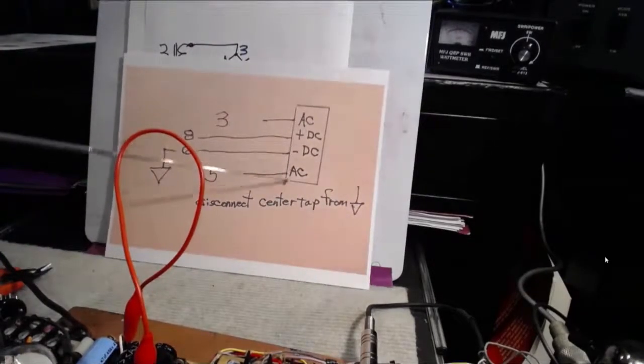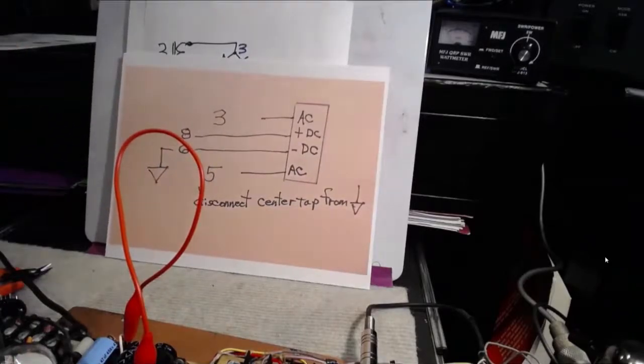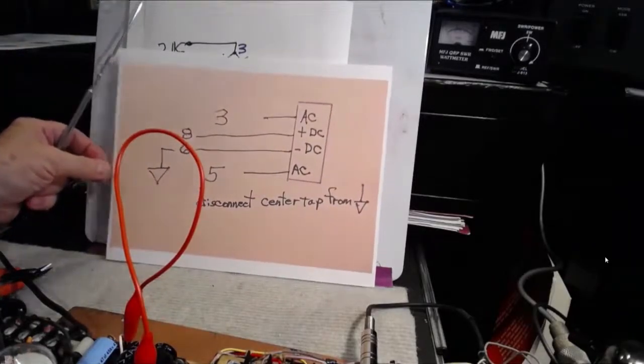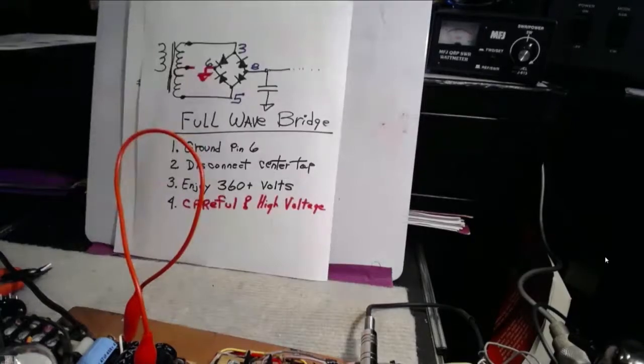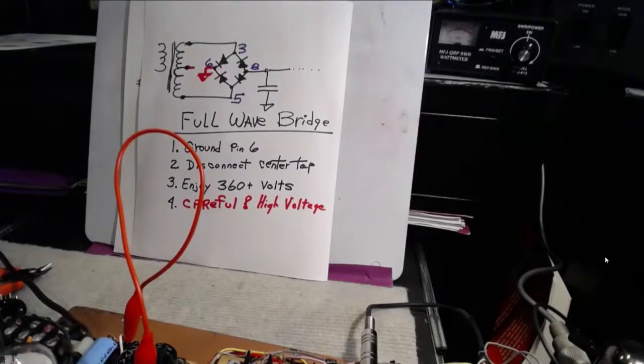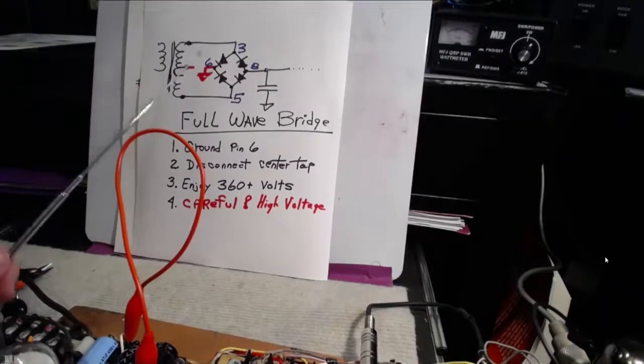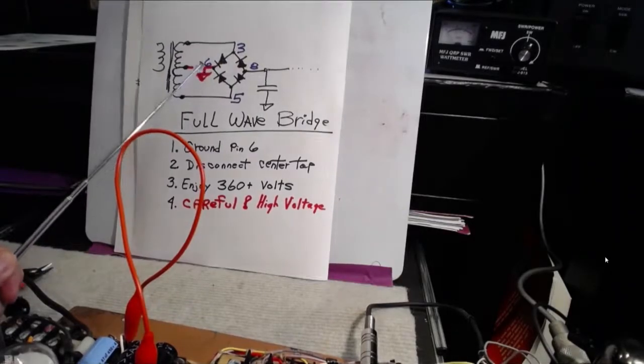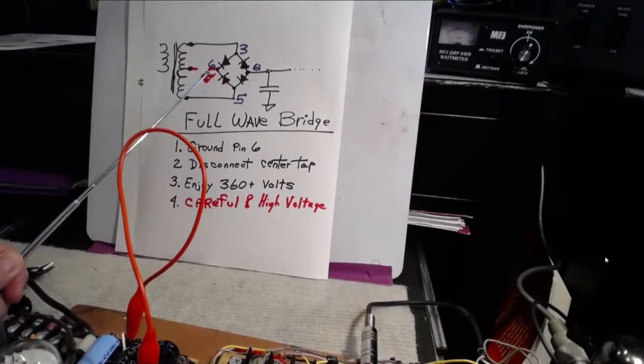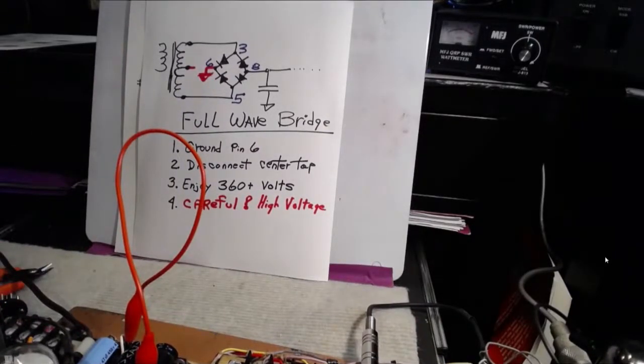Once we do that, here is the heart of the whole thing. It's available at all of the places. Any kind of little electronic parts store is going to have a bridge rectifier. Pin 6 is not used in the tube circuit. So we have to run a ground wire on pin 6 to ground. Should have done that in the beginning, but that's okay, because we weren't using it.